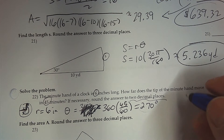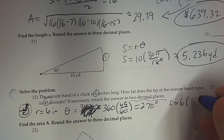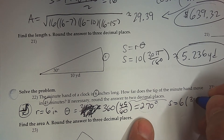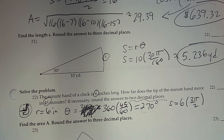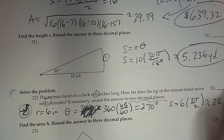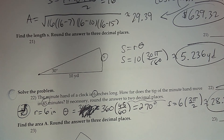The formula to find the distance traveled is the arc length. The arc length is 6, and we have to change 270 degrees to radians. You can go 270 times pi over 180, or just know it's 3π over 2. So 6 times 3π divided by 2, rounded to two decimal places, is 28.27 inches. That's how far the minute hand moved in 45 minutes.